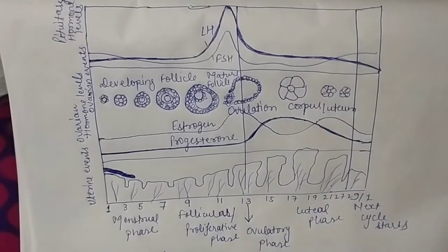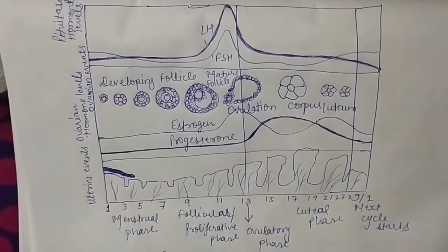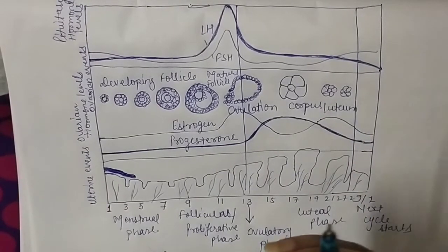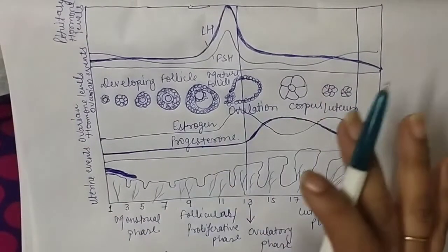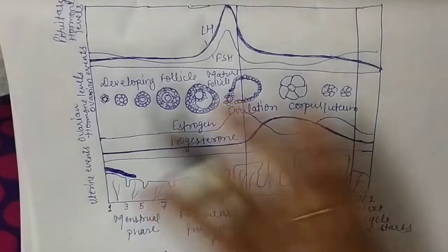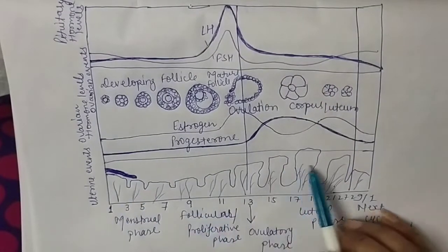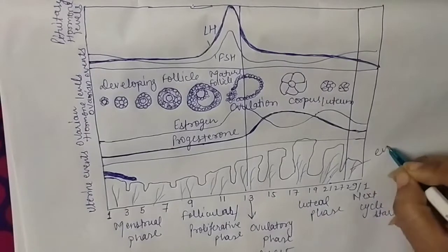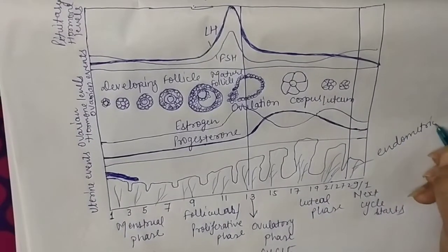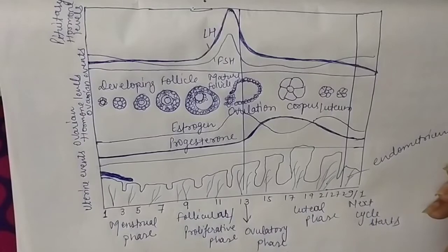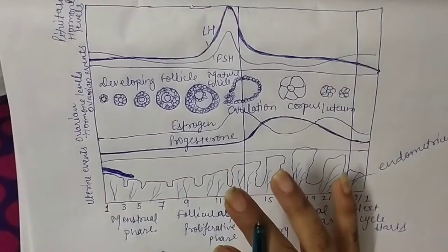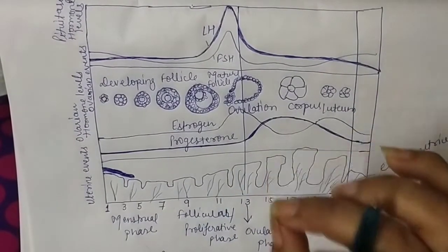There is a thick layer which undergoes many cyclic changes during this cycle. This is known as endometrium lining. The cycle starts from the mid-point.